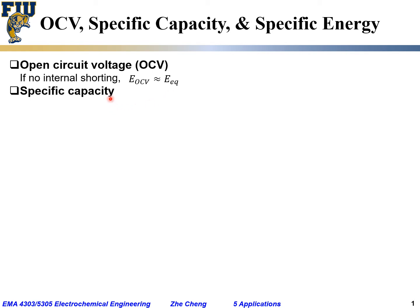And then specific capacity means the charge stored for an electrode reaction or for an electrochemical cell. It can be either for an electrode or for an electrochemical cell, but let's say it's for an electrode.